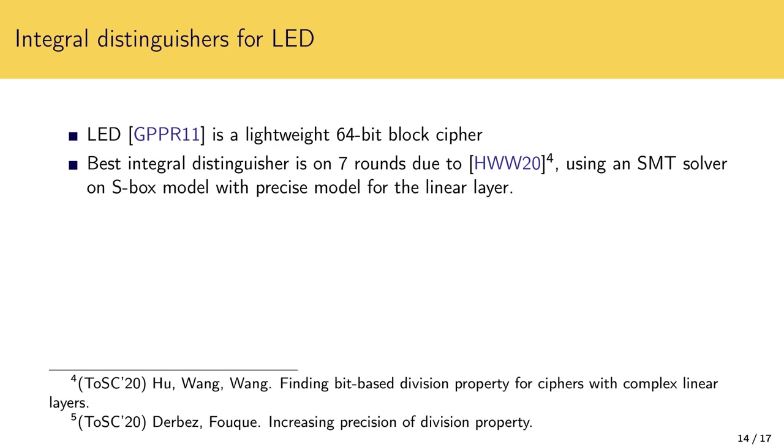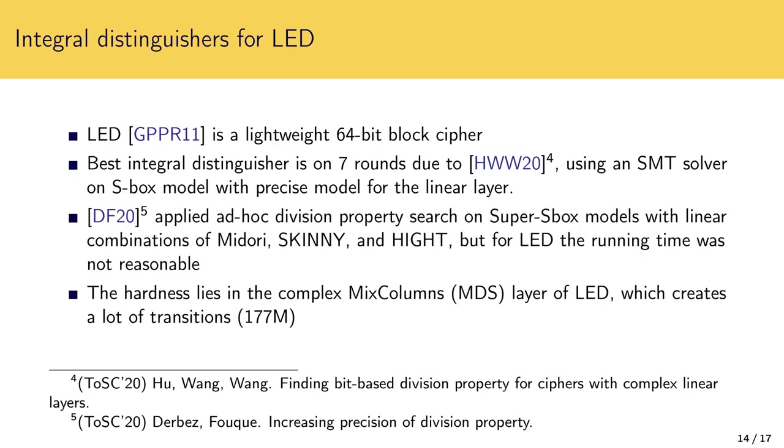Recently, Derbez and Foucq applied ad-hoc division trail search using super S-box models of ciphers and linear combinations of bits at the input and at the output. Their method was not practical for LED due to its complex linear layer. Therefore, the question remained open whether the super S-box model with linear combinations can find 8-round distinguisher or not.